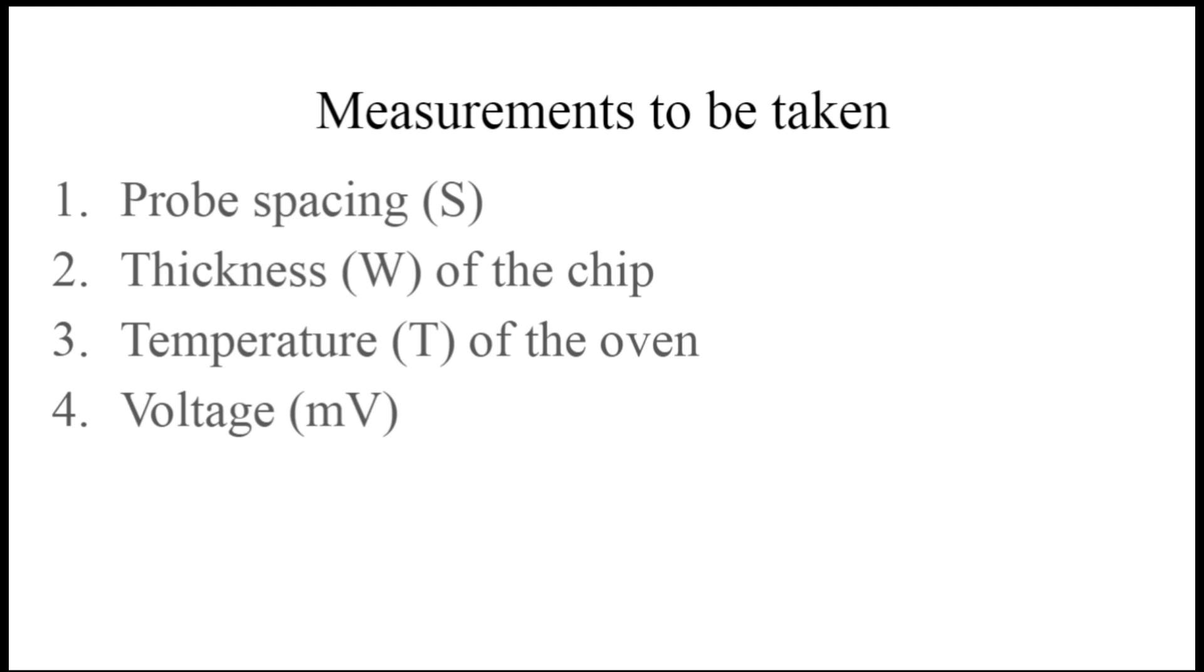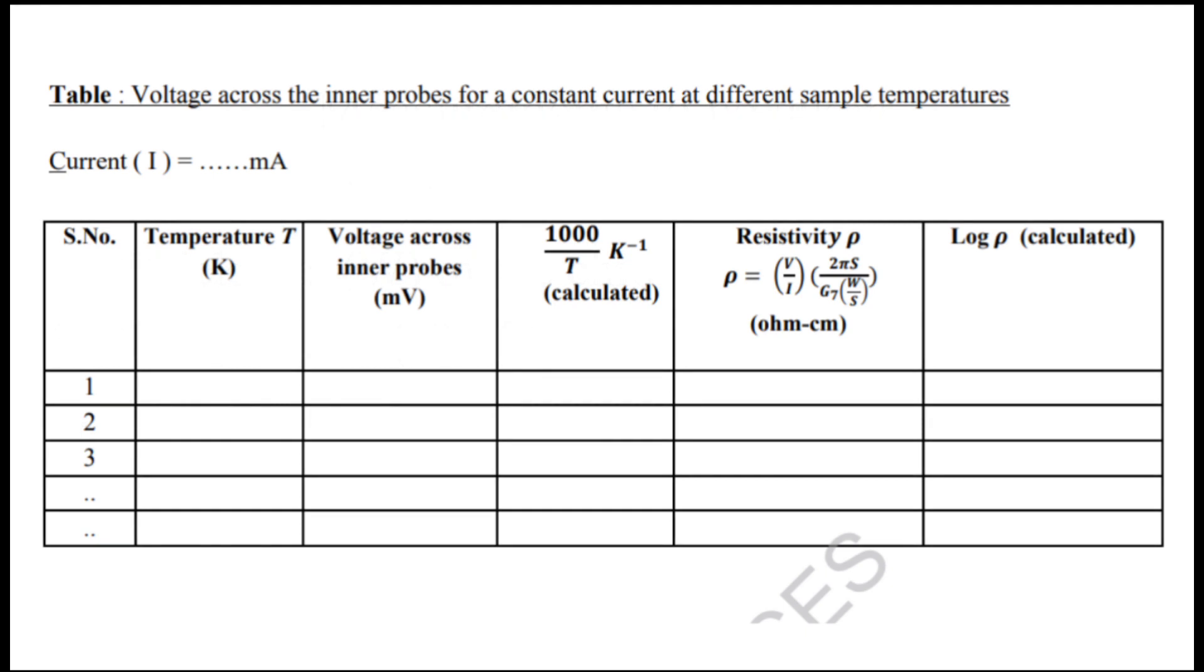This is the observation table which you are going to make in your registers. It will consist of temperature in Kelvin, voltage across the inner probes in millivolts, 10^3/T in inverse Kelvin, and the resistivity. For the resistivity you are going to use this formula, and after finding the resistivity, you are going to calculate the log of rho.